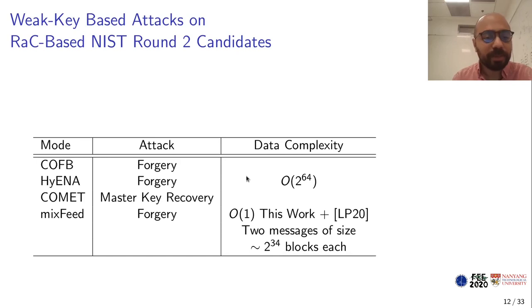Now we show in the paper that using this idea, we can attack COFB and HENA with forgery attacks with complexity 2 to the 64. However, this does not affect the designs as they only claim security up to complexity of 2 to the 58. In case of COMET, this allows master key recovery with the same complexity asymptotically. Again, this does not affect the security proof of COMET, because COMET assumes the data complexity is only 2 to the 60 in terms of how many blocks.